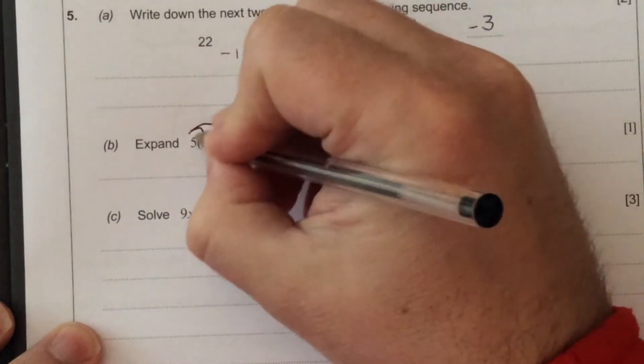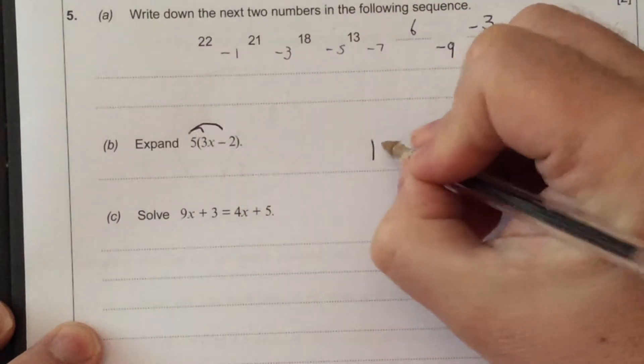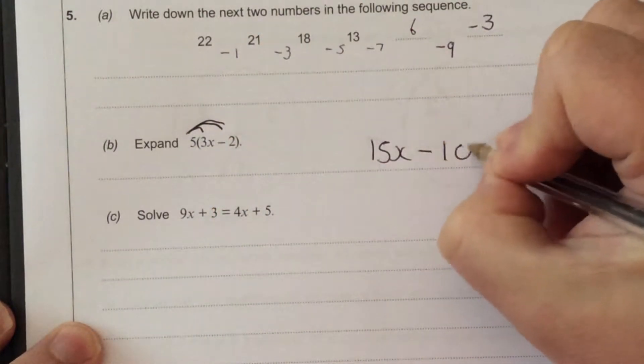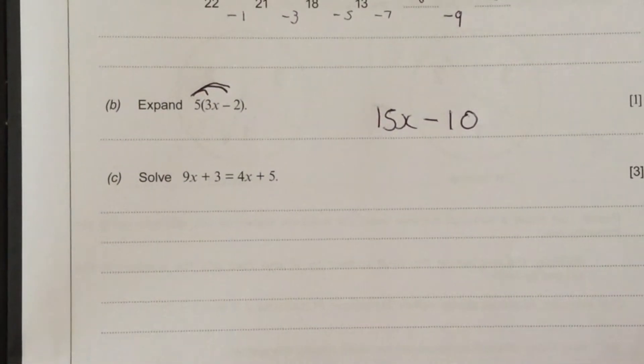When we expand the bracket, times 5 by 3x is 15x, 5 times 2 is 10, so it's 15x minus 10.